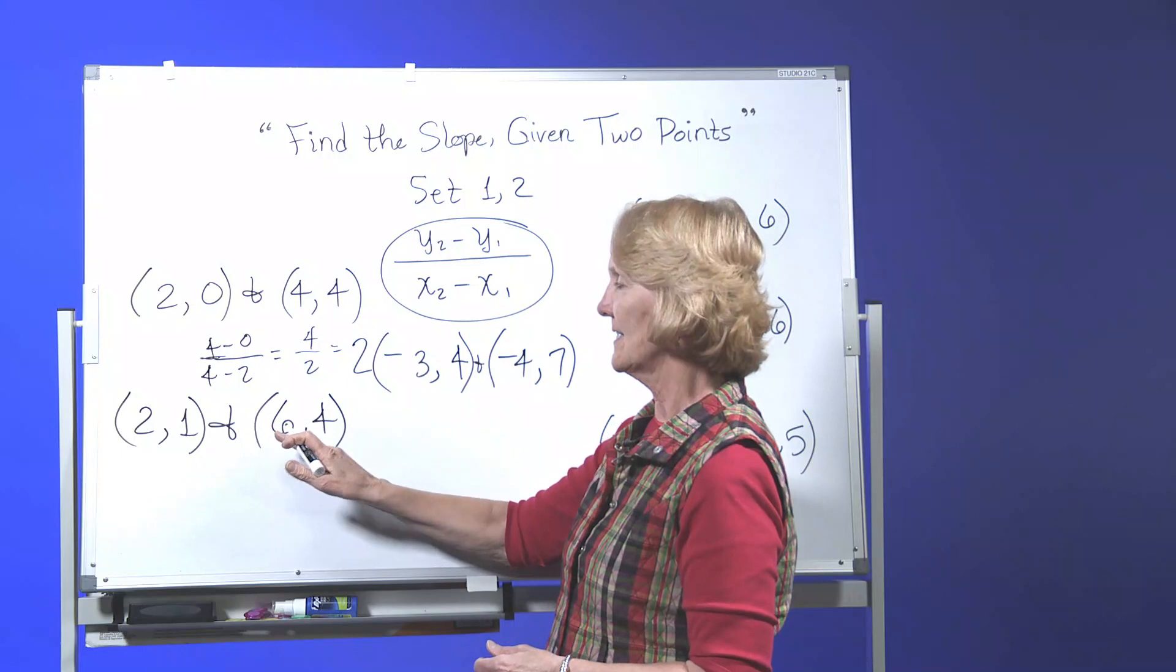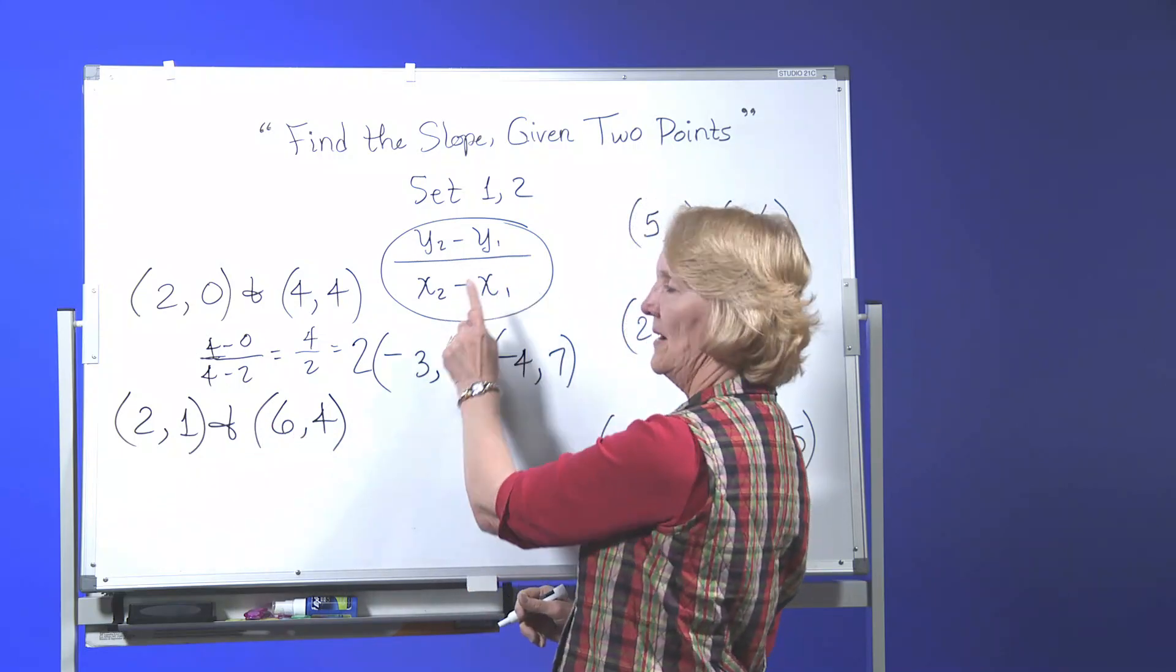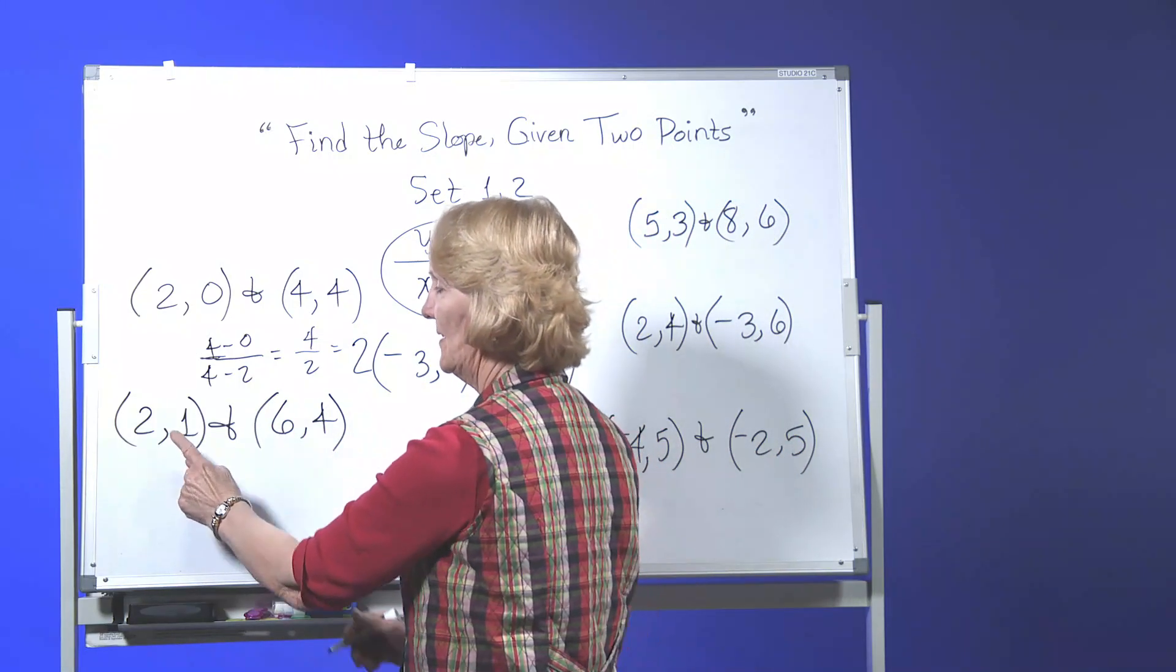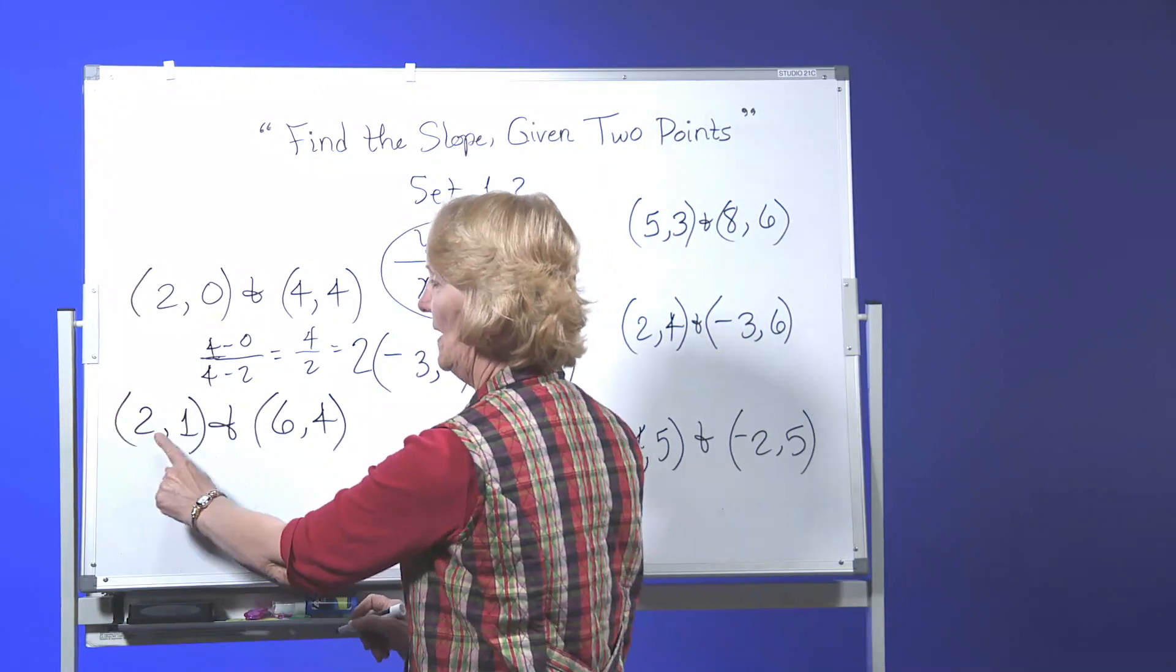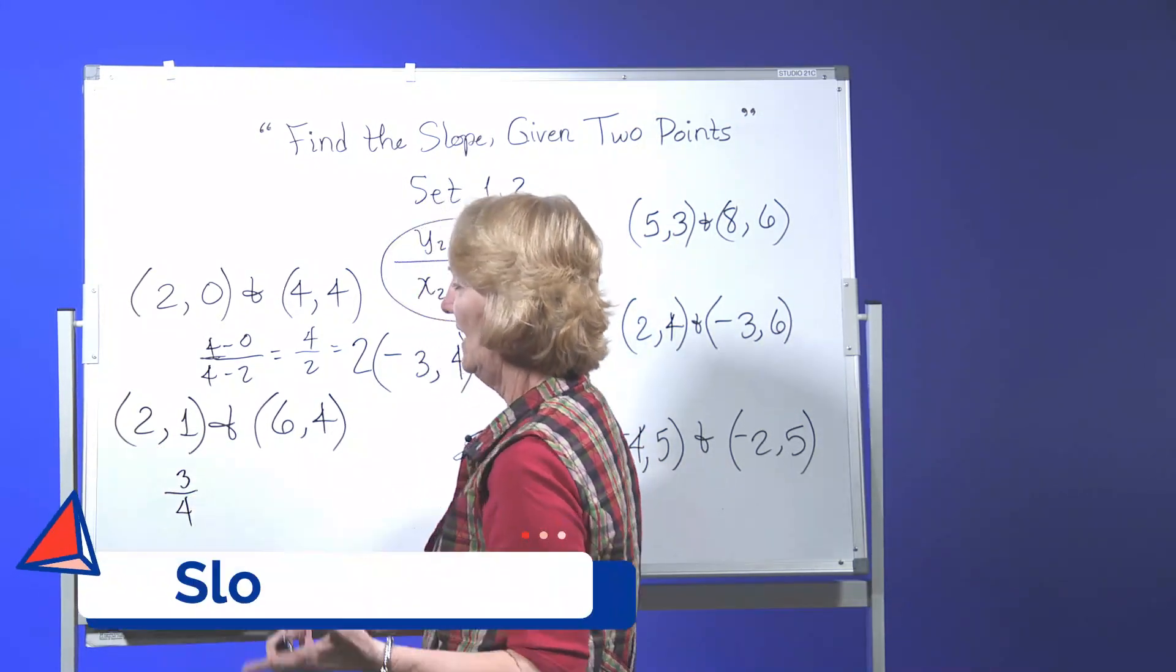Next one, 2, 1 and 6, 4. You take your second y minus your first one. 4 minus 1 is 3. 6 minus 2 is 4 and you're done.